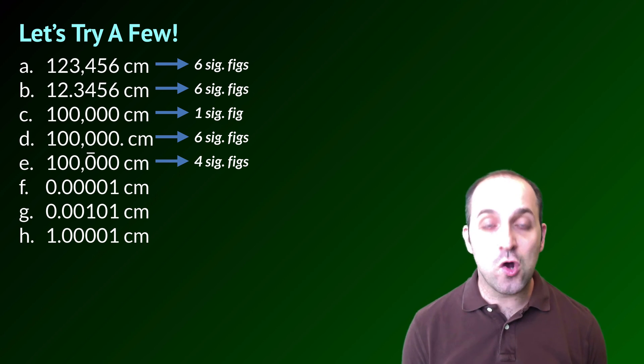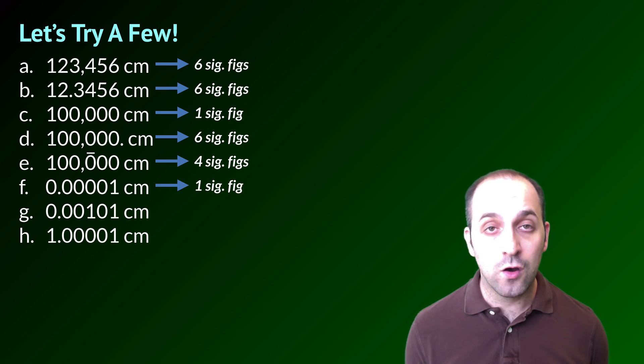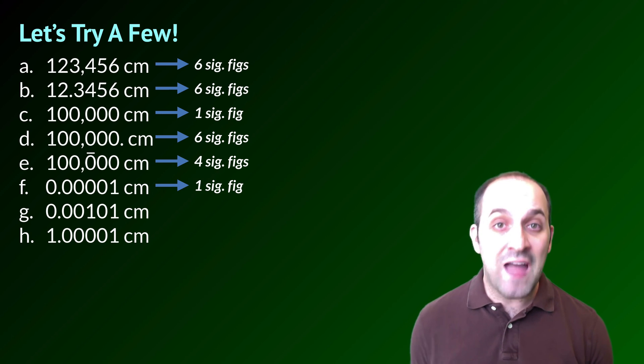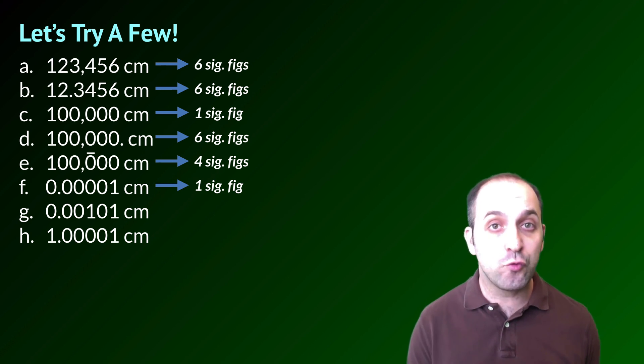F, G, and H all have decimal points present, and that changes things a little bit. F has one significant figure. The reason for this is because that's the only non-zero number in the measurement, and all of those zeros upstream of that one are just helping to indicate that that one occupies the hundred thousandths place of our measurement in terms of its magnitude.